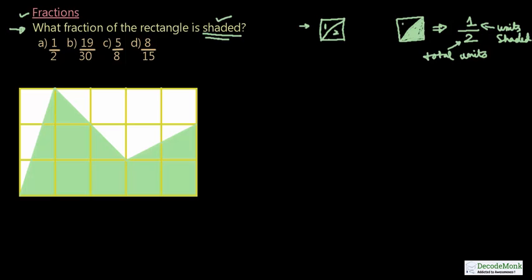Now let us proceed to our question. Our figure consists of 3 rows and 5 columns, giving us a grid of squares to analyze.